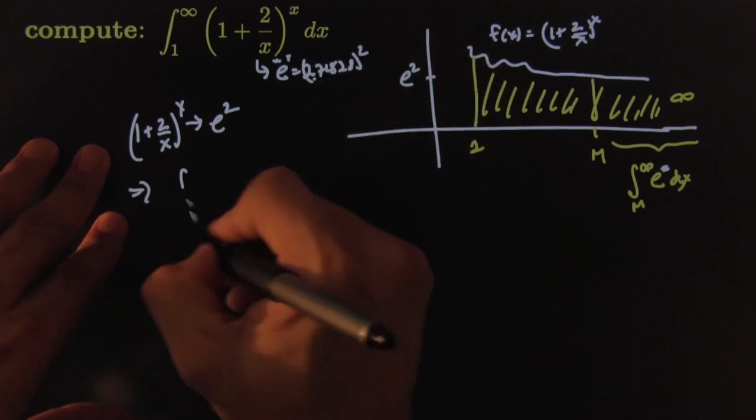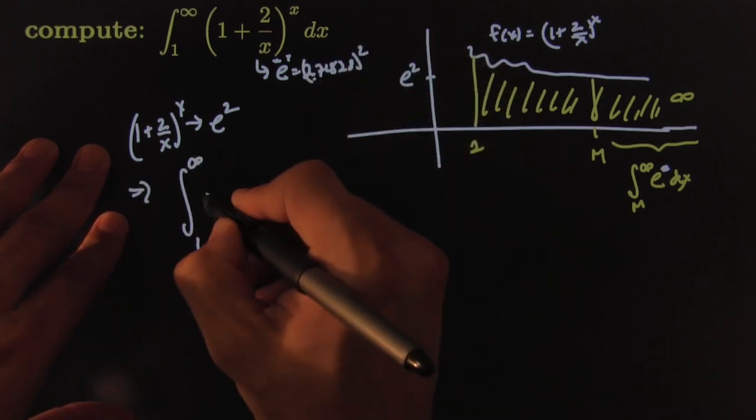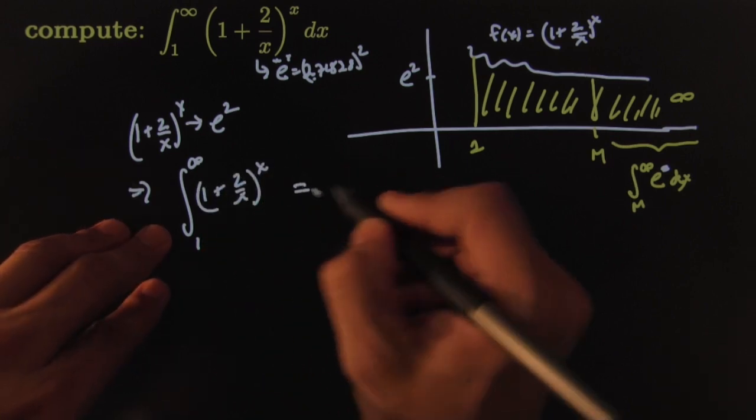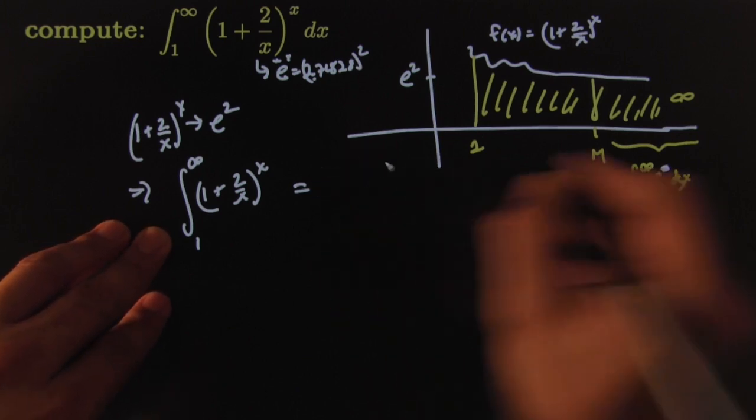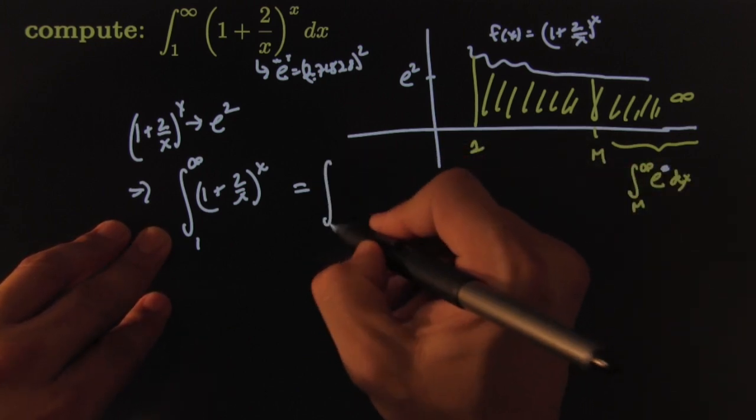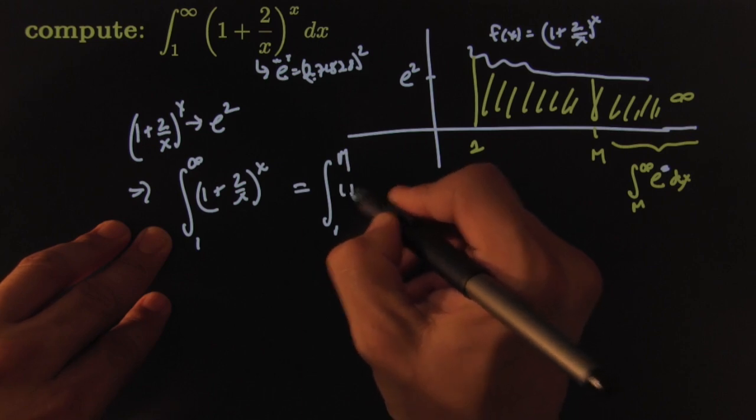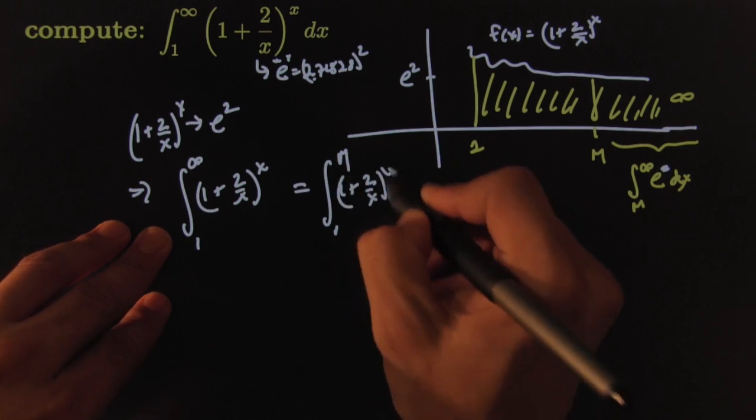Therefore the integral from 1 to infinity of (1 + 2/x)^x dx is equal to—you know, some number here at the beginning—the integral from 1 to m of (1 + 2/x)^x dx